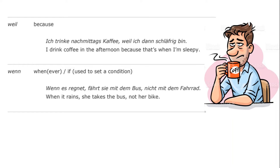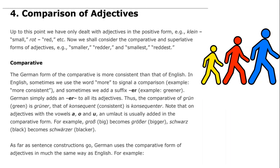"Weil" means "because" — one of the most common subordinating conjunctions you will deal with. For example, "Ich trinke nachmittags Kaffee, weil ich dann schläfrig bin" — I drink coffee in the afternoon because that's when I get sleepy. The last one is "wenn," which means "whenever" or "if" used to set a condition: "Wenn es regnet, fährt sie mit dem Bus, nicht mit dem Fahrrad."